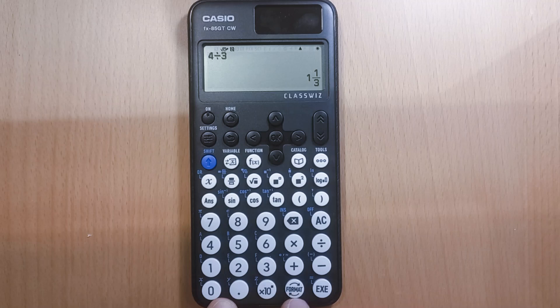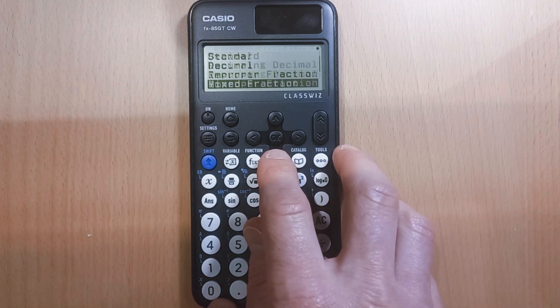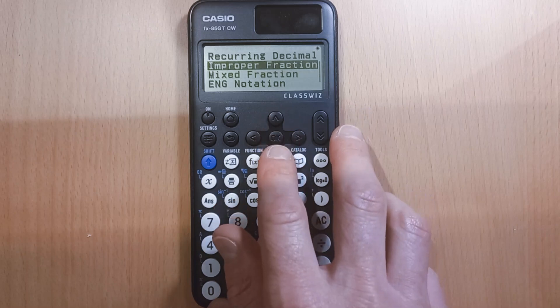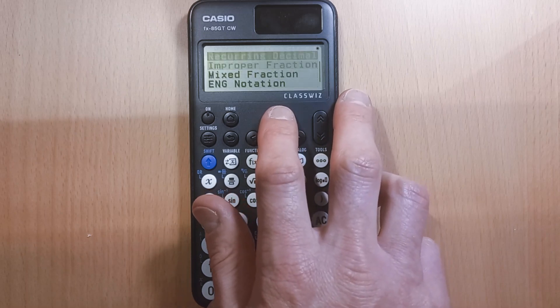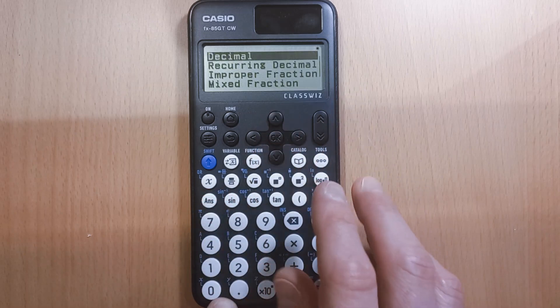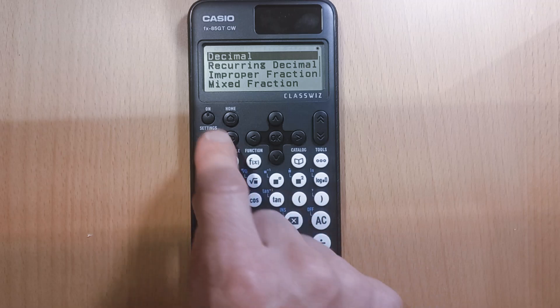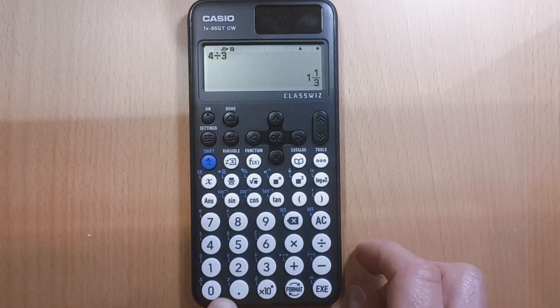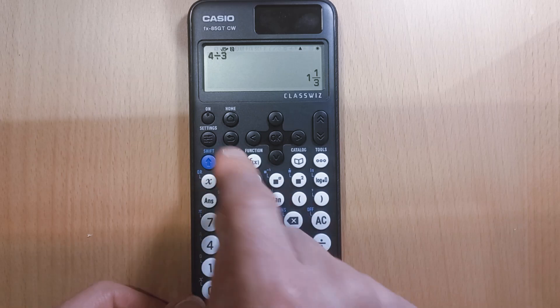So essentially, instead of the SD button, you need to press format and then choose which of these options you want. I wouldn't bother with the ENG notation. Now, one thing you might still want to know—if we just go back—is how can I change my default?